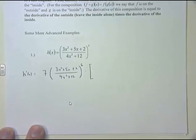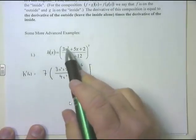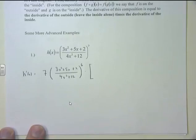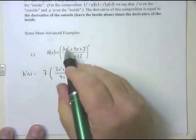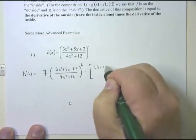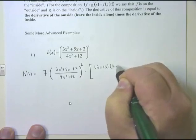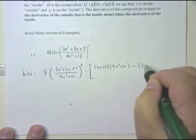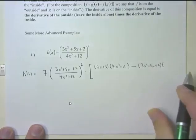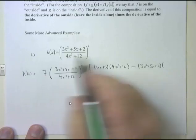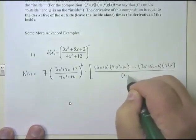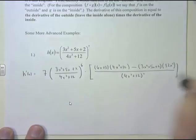Times the derivative of the inside. The inside is (3x² + 5x + 2)/(4x³ + 12) — that's the quotient rule. Quotient rule: derivative of the top times the bottom minus the top times the derivative of the bottom, all over the bottom squared. Derivative of 3x² + 5x + 2 is 6x + 5. Times the bottom, 4x³ + 12. Minus the top, 3x² + 5x + 2, times the derivative of the bottom, 12x². All over (4x³ + 12) squared. That's the solution.